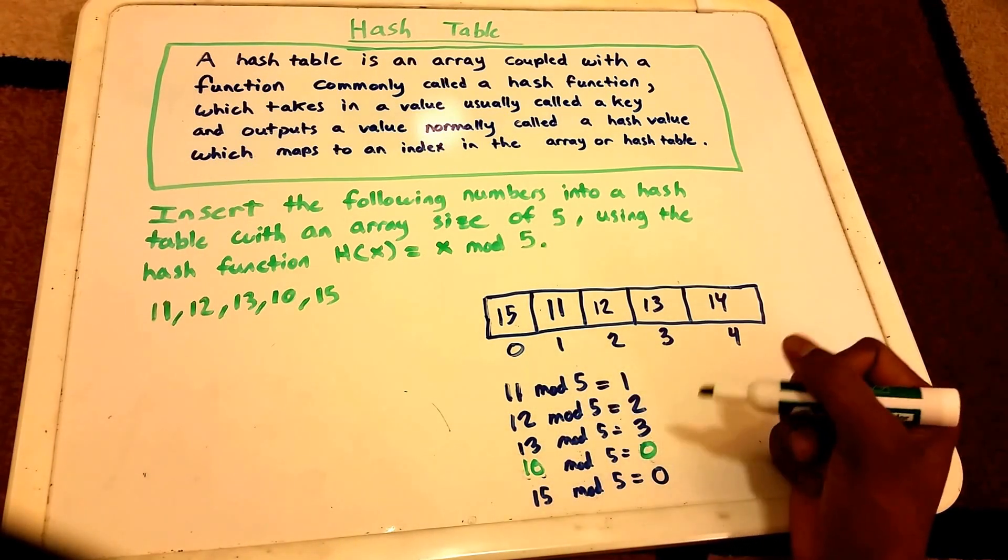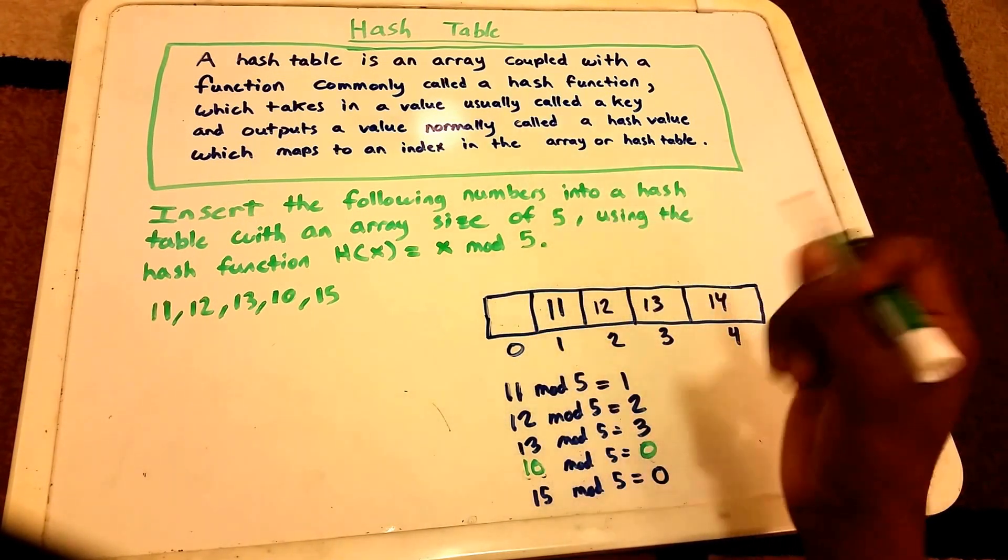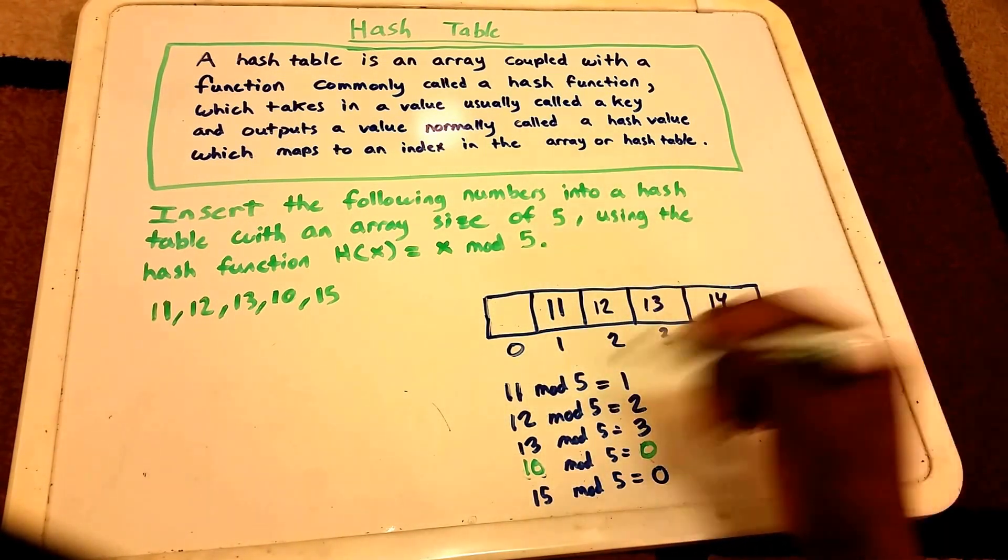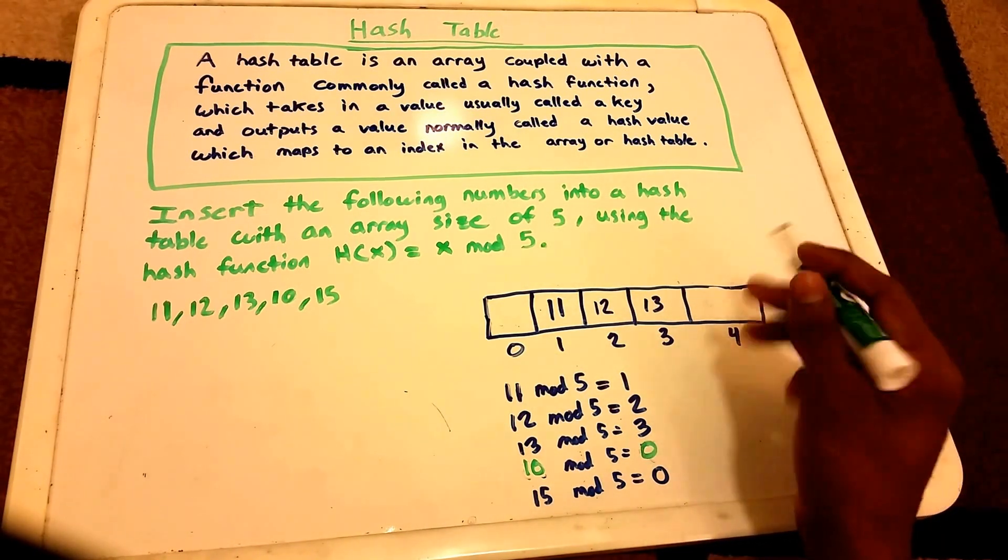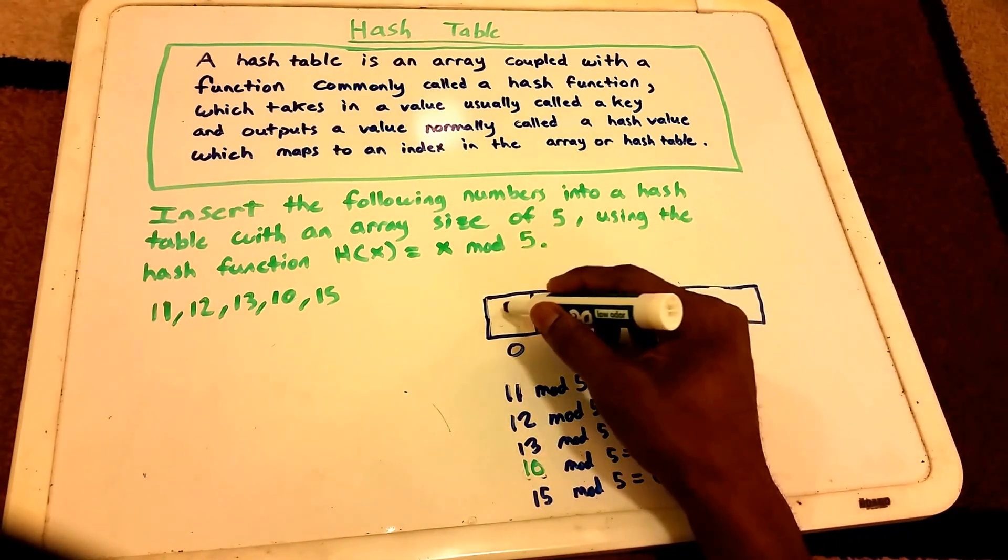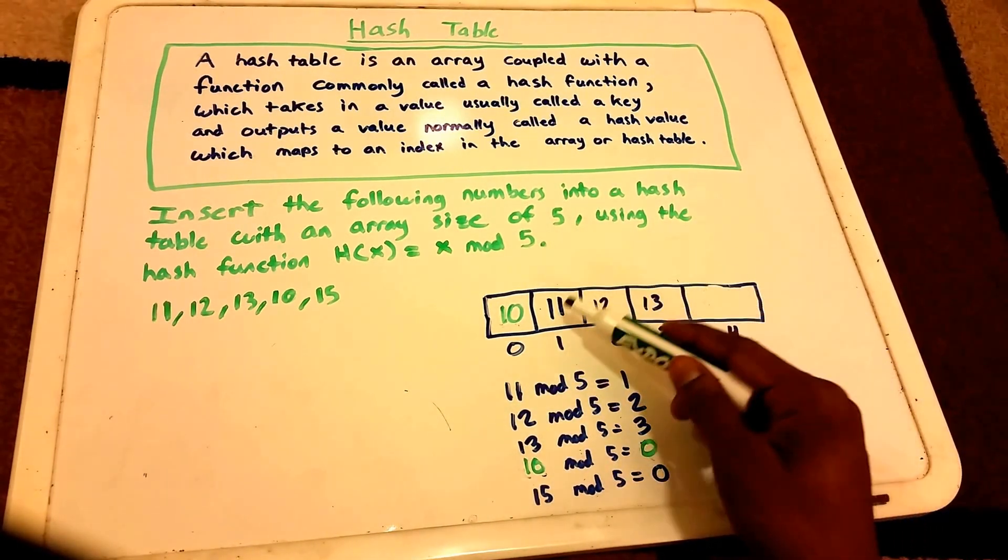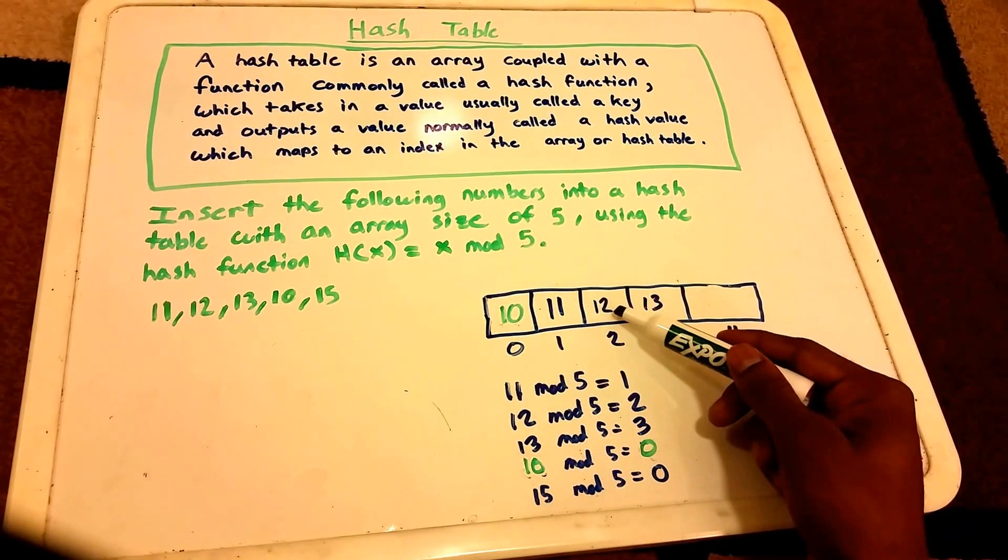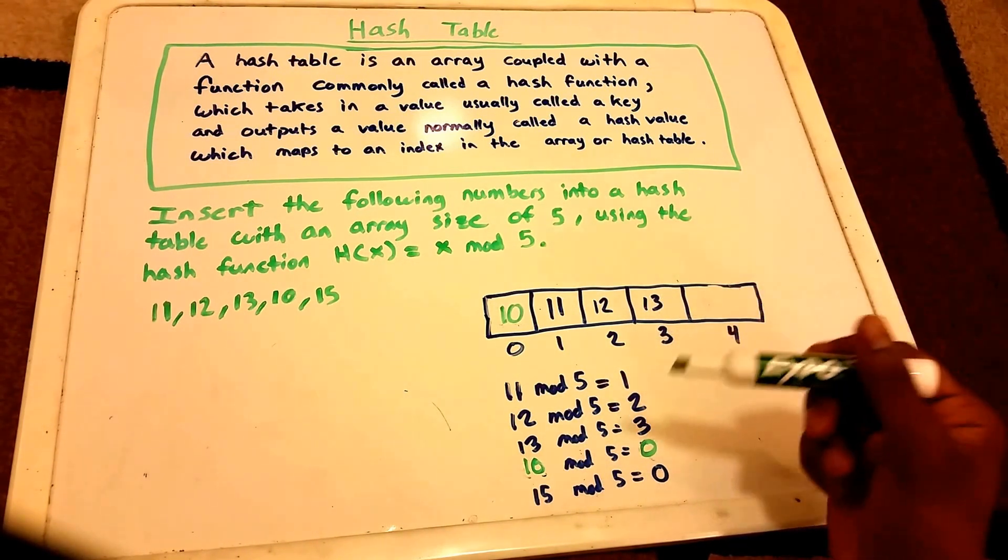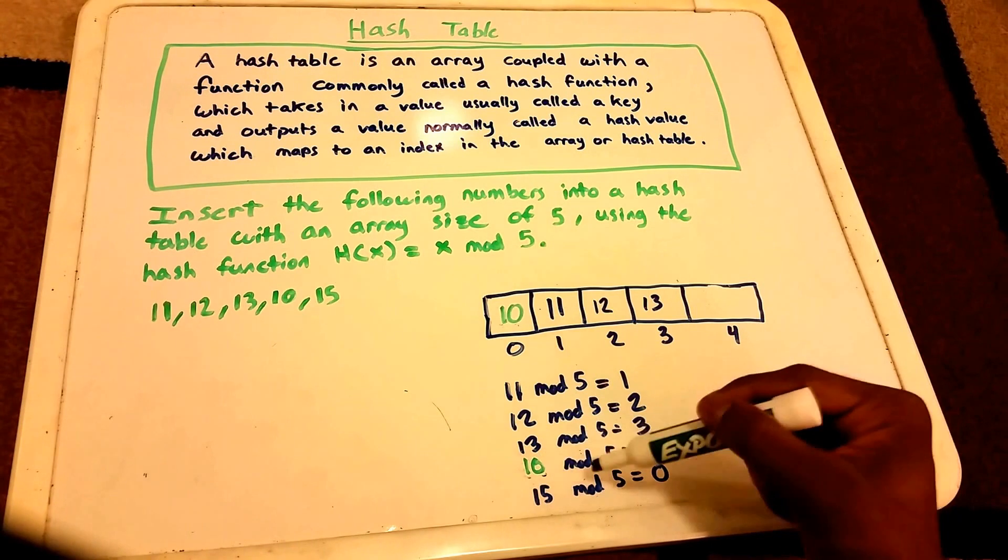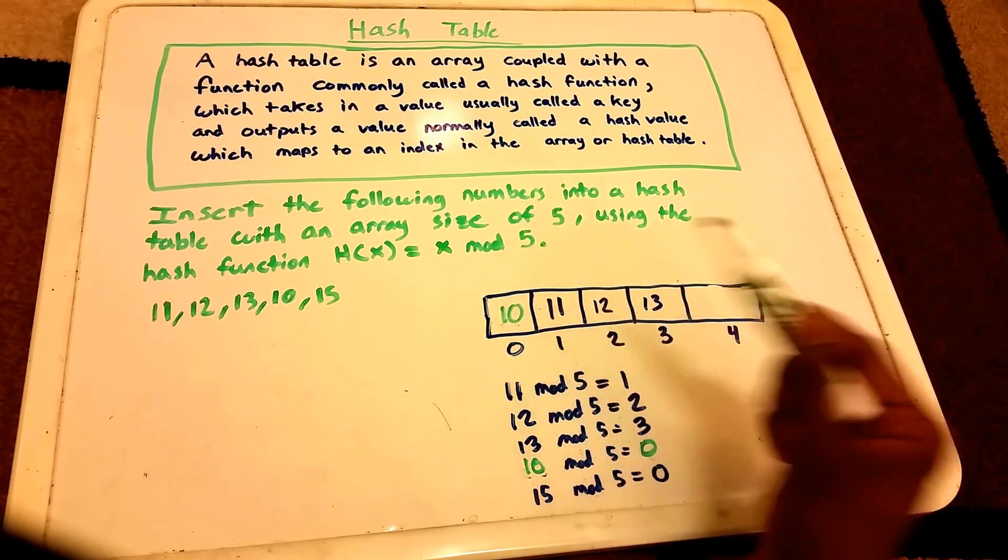So 10 mod 5 is 0. We wouldn't have that 15 there because we haven't gotten to 15 yet. We would have a 10 here. If we follow the same path: we did 11 mod 5 first and put 11, then 12 mod 5 and put 12, 13 mod 5 and put 13 at index 3. Then we get to the value 10 mod 5, which gives us hash value 0, so we put 10 there.